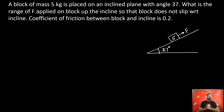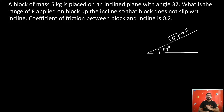A block of 5 kg is placed on an inclined plane with angle 37 degrees. What is the range of capital F applied on the block up the incline so that the block does not slip with respect to the incline? The coefficient of friction between the block and the incline is 0.2. Pause the video and try it.